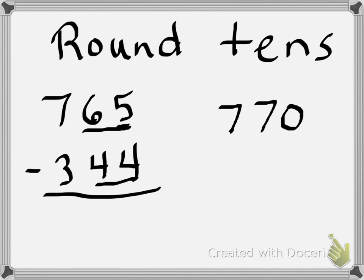44 is between 40 and 50. With a 4 in the ones place, I'm going to round it down to 40. But that makes no sense. 344 would not round to 40, but it would round to 340.